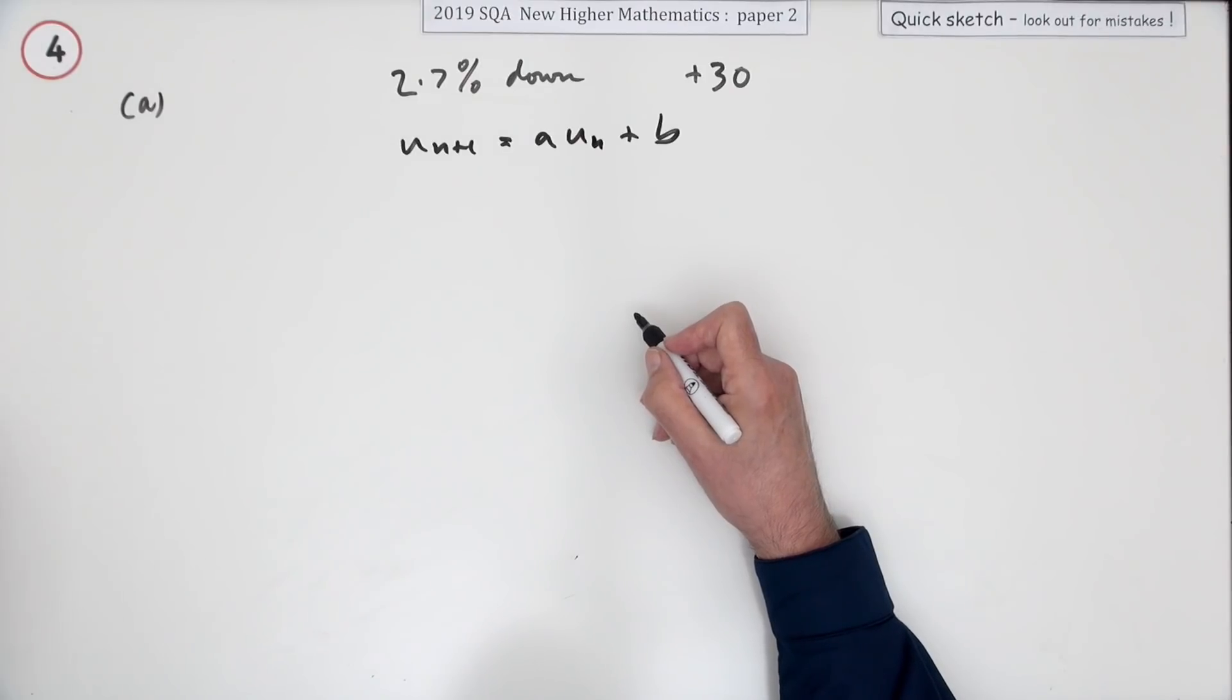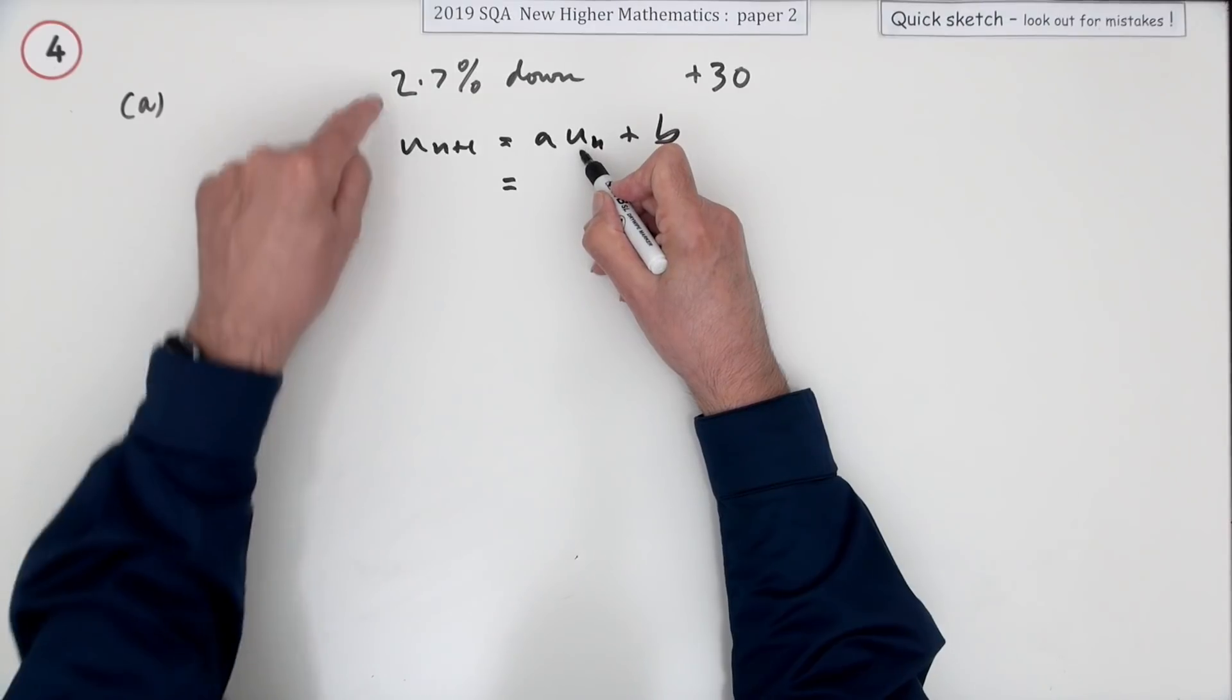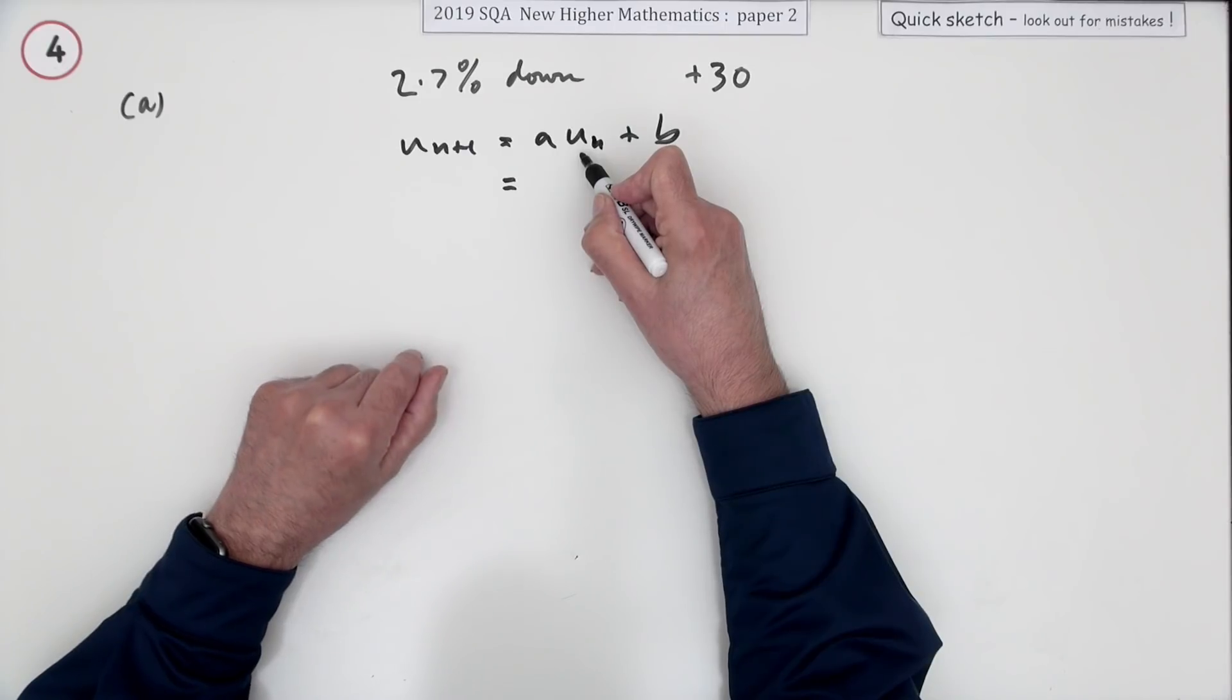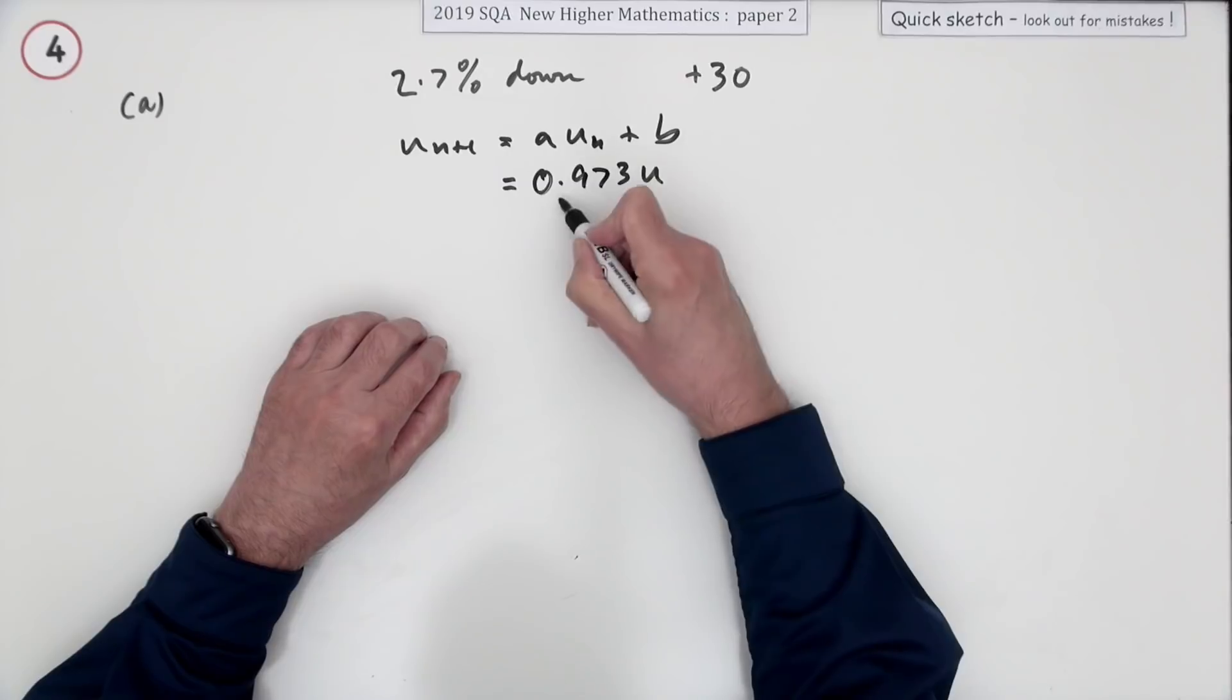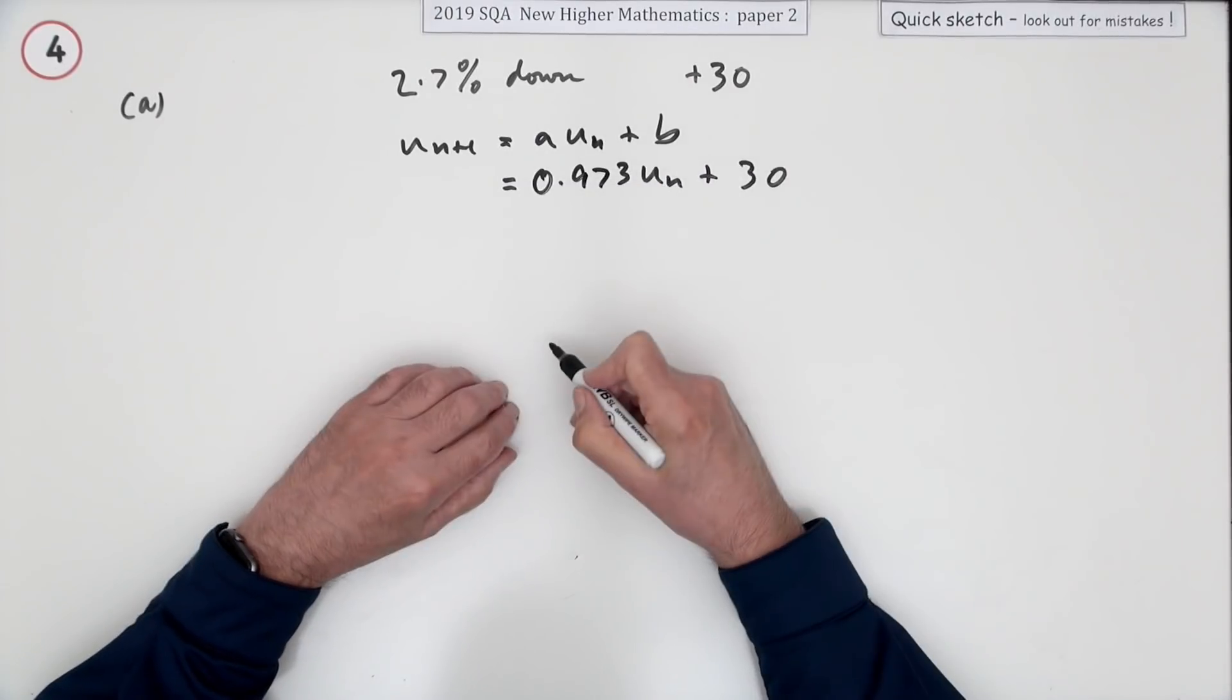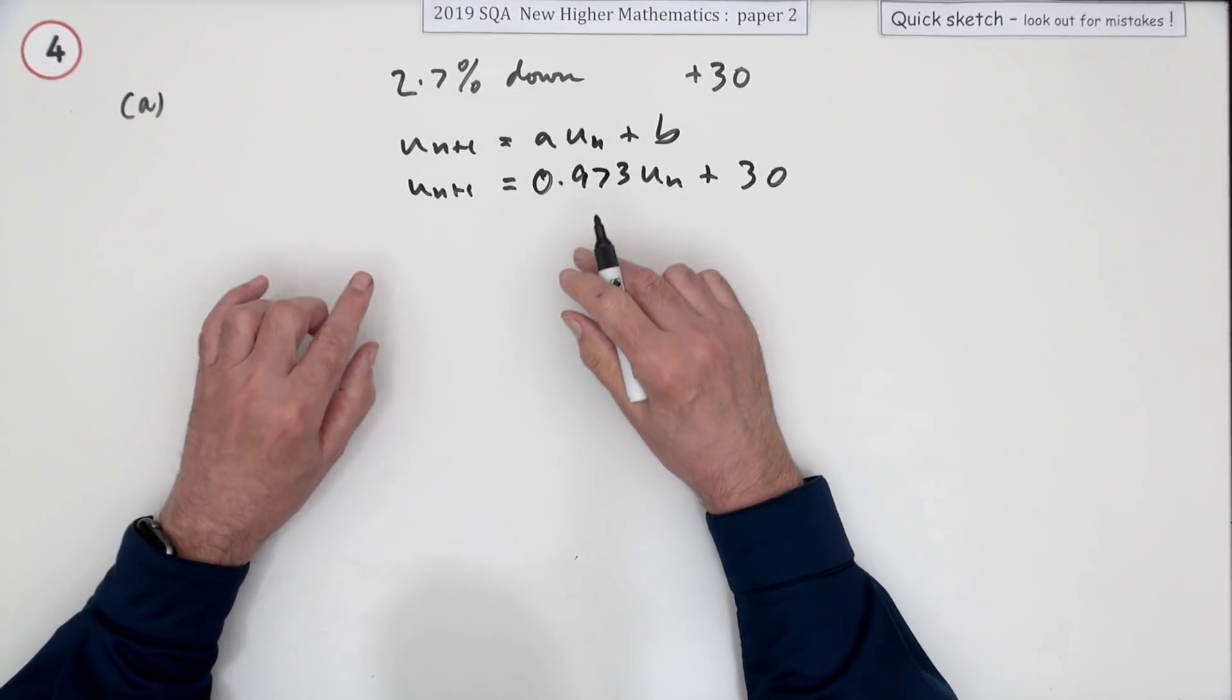Well if UN was a population one year, if it falls 2.7 percent each year, you'll be left with 97.3 percent, 0.973 of what there were, and then you release another 30. But they weren't asking you to rewrite it, they wanted you to state that.